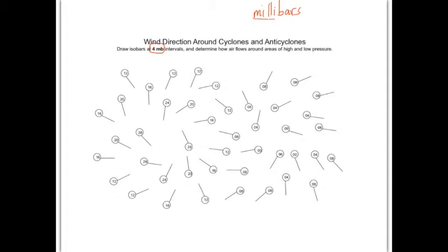You probably recognize milli as the prefix that means one one-thousandth. A bar is the same word that barometer comes from — isobars, barometric pressure. One bar equals really the weight of one atmosphere. Since you live at the bottom of the atmosphere, you are experiencing one bar of pressure, and that can be broken up into thousandths. Right around at the bottom of the atmosphere where we live, the pressure hovers right around a thousand millibars.